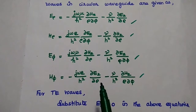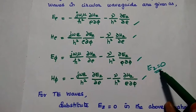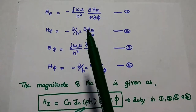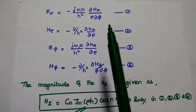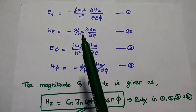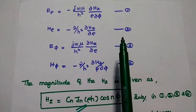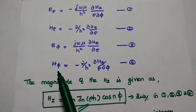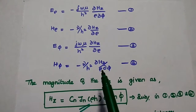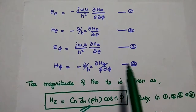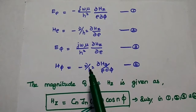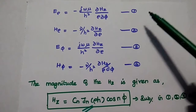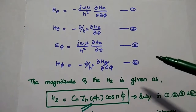In these expressions, we are going to substitute Ez equal to zero. Then those terms become zero. Then we can get E_rho equal to minus j*omega*mu by H² times (dou Hz / rho dou phi) — that is the second equation. E_phi is equal to j*omega*mu by H² times (dou Hz / dou rho) — the third equation. And H_phi is equal to minus gamma by H² times (dou Hz / rho dou phi) — the fourth equation. Now we have obtained these field components in terms of Hz alone, and in the next step we are going to substitute the value of Hz into these four equations.